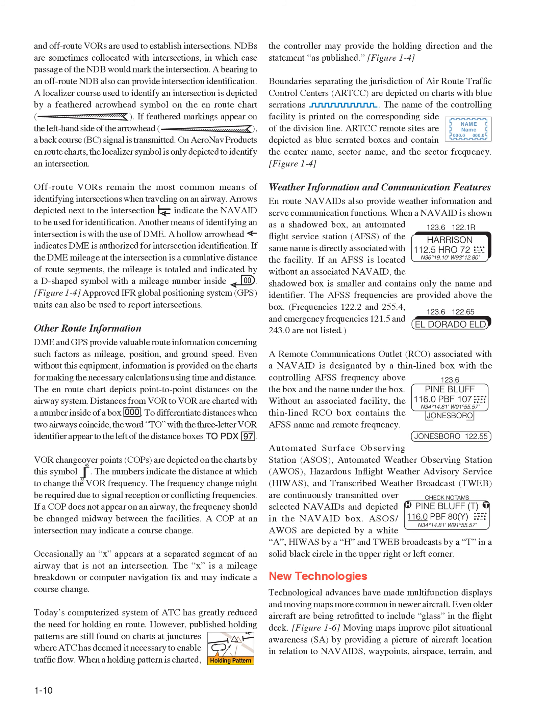Other route information: DME and GPS provide valuable route information concerning such factors as mileage, position, and ground speed. Information is also provided on charts for making necessary calculations using time and distance. The on-route chart depicts point-to-point distances on the airway system. Distances from VOR to VOR are charted with a number inside of a box. VOR changeover points, COPs, are depicted on the charts by a symbol, and the numbers indicate the distance at which to change the VOR frequency. The frequency change might be required due to signal reception or conflicting frequencies. If a COP does not appear on an airway, the frequency should be changed midway between the facilities. A COP at an intersection may indicate a course change. An X appearing at a separated segment of an airway indicates a mileage breakdown or computer navigation fix and may indicate a course change.